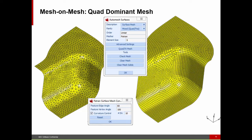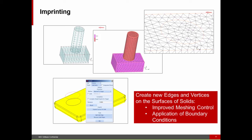Another MENTAT capability is mesh-on-mesh, now able to generate predominantly quadrilateral meshes. Before, if we had a surface — either a previously generated triangular mesh or an STL file from a CAD system — mesh-on-mesh would generate all triangles. Now we have the capability to generate a quadrilateral-dominant mesh, which you might want for a structural analysis following a manufacturing process.